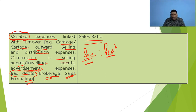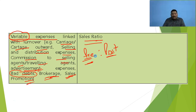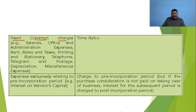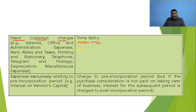Let us move to the third portion. The third item is fixed common charges — fixed expenses or fixed charges that will not be affected by the volume of sales. Definitely these items will be distributed in the ratio of time. What are the main examples of these expenses?